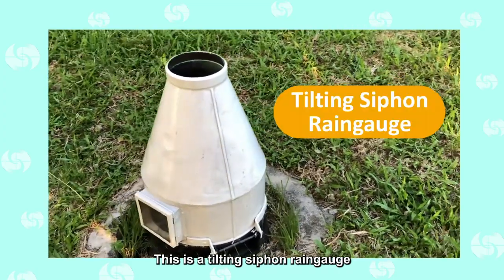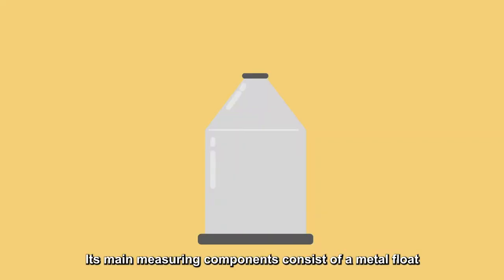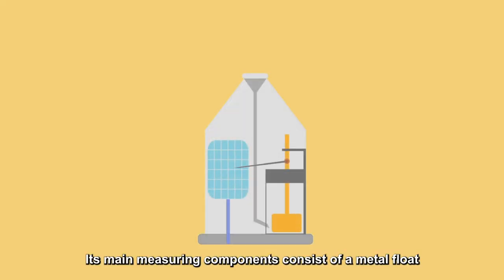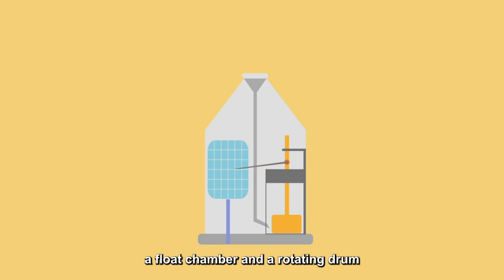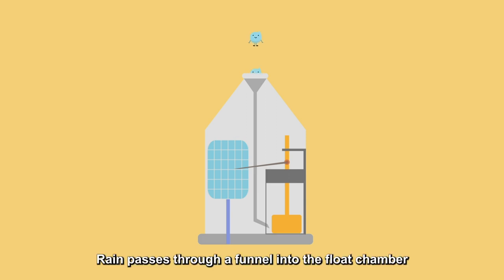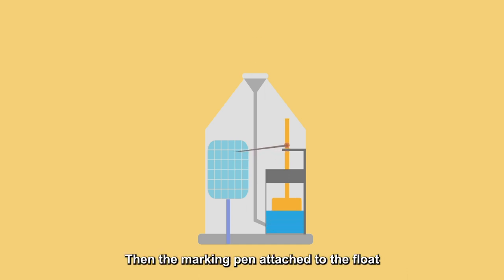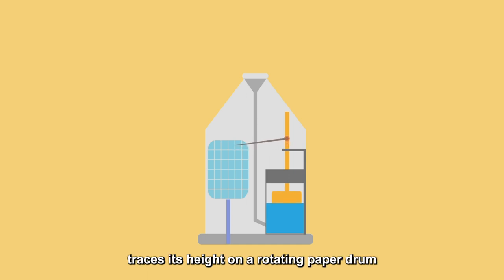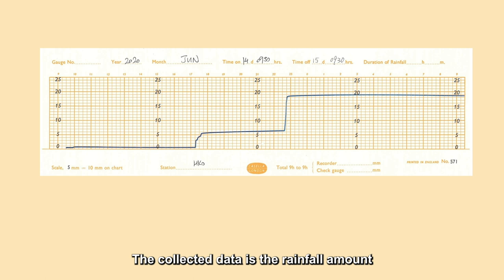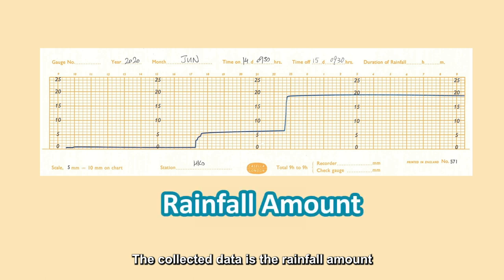This is a tilting siphon rain gauge. Its main measuring components consist of a metal float, a float chamber, and a rotating drum. Rain passes through a funnel into the float chamber. The float rises as the water level increases, and a marking pen attached to the float traces its height on a rotating paper drum. The collected data is the rainfall amount.